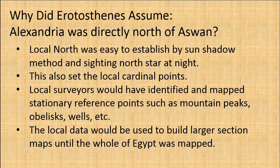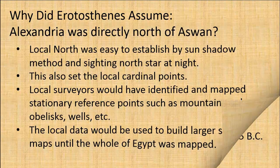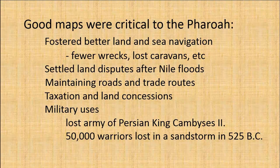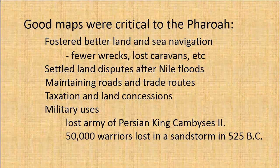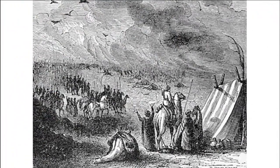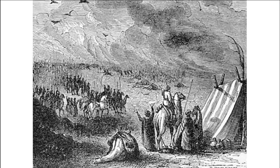This also set the other local cardinal points, east, south, west, and bearings in between. The local surveyors would have identified and mapped stationary reference points, such as prominent land features, obelisks, wells, etc. The local data would be used to build larger section maps until the whole of Egypt was mapped. Also, good maps were critical to the Pharaoh. They fostered better land and sea navigation, fewer wrecks, lost caravans, etc. They settled land disputes after Nile floods, maintaining roads and trade routes, taxation and land concessions, and military uses. There's a famous lost army of a Persian king. 50,000 warriors were lost in a legendary sandstorm in 525 BC. So the Pharaoh had powerful reasons to invest in good surveyors, maps, and scientific experts to support key government functions.